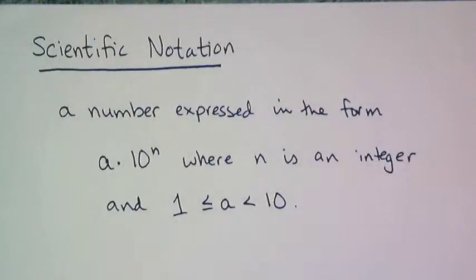In case you don't remember scientific notation from your science class, here's the definition. It is a number expressed in the form a times 10 to the nth power, where n is an integer and a is between 1 and 10, where it can be 1 but it can't be 10.